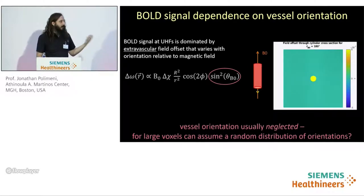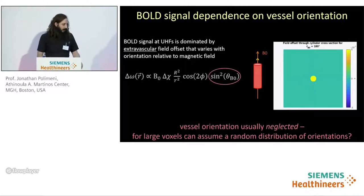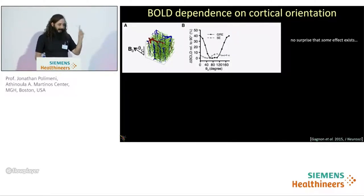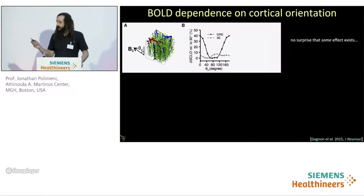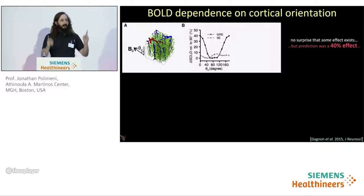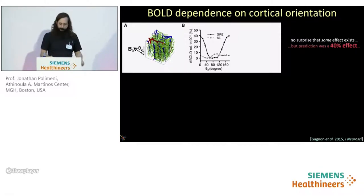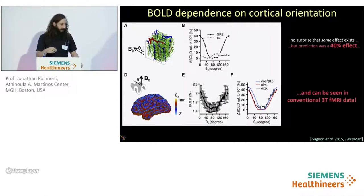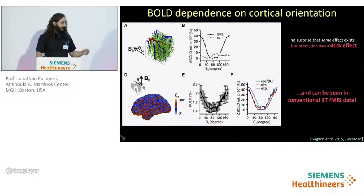While this effect is well known, vessel orientation is usually neglected in conventional studies because for large voxels we can assume that every voxel contains a random distribution of orientations. A recent work by Louis Gagnon and David Boas' lab used microvascular reconstructions of the mouse cortex to quantify through simulations the orientation effect expected from a voxel containing realistic microvascular geometry. Their simulations predicted a 40% effect — that places where the cortex is oriented parallel to the magnetic field would have 40% larger BOLD signal change than places oriented perpendicularly. They then validated this with a CO2 delivery whole-brain activation on a conventional 3T scanner, seeing similar effect sizes to their simulations.